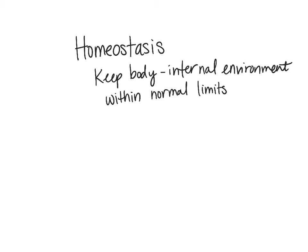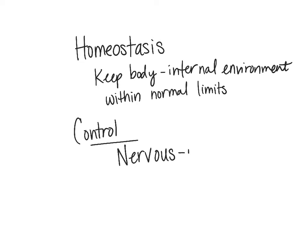The body maintains homeostasis through different ways. When controlling homeostasis, we're mainly talking about two systems. The first is the nervous system, which controls it generally through nerve impulses and action potentials — we'll talk more about that when we get to the nervous system and muscular system.